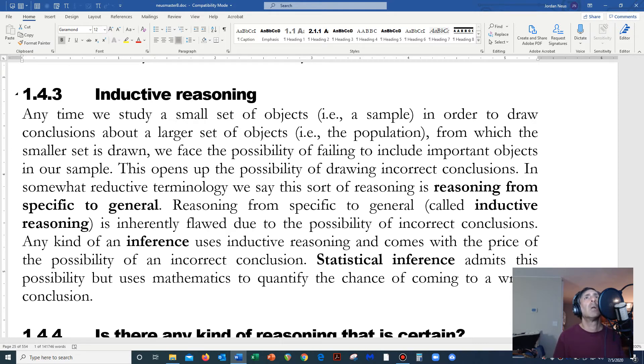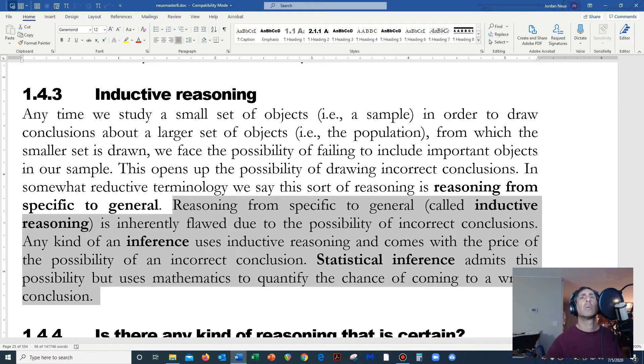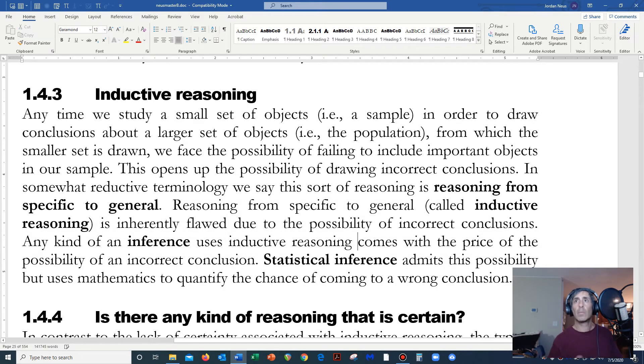But that's not possible. So, when we study a sample and we draw a conclusion about the population from which the sample was drawn, that is called a statistical inference. Statistical inference. And I want you to listen to this sentence really carefully. Reasoning from specific to general, called inductive reasoning, is inherently flawed due to the possibility of incorrect conclusions. Any kind of an inference uses inductive reasoning and comes with the price of the possibility of an incorrect conclusion. Statistical inference admits this possibility but uses mathematics to quantify the chance of coming to a wrong conclusion.